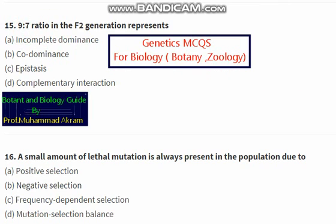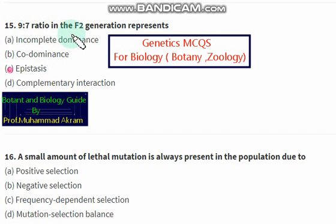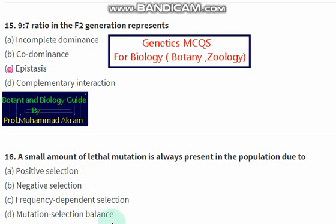A 9:7 ratio in the F2 generation represents epistasis — not incomplete dominance or co-dominance. If we get a 9:7 ratio in the F2 generation, it represents epistasis. A small amount of lethal mutations is always present in a population due to — the right option is option D — mutation-selection balance.